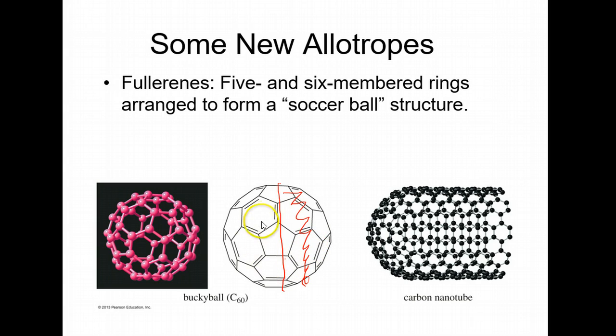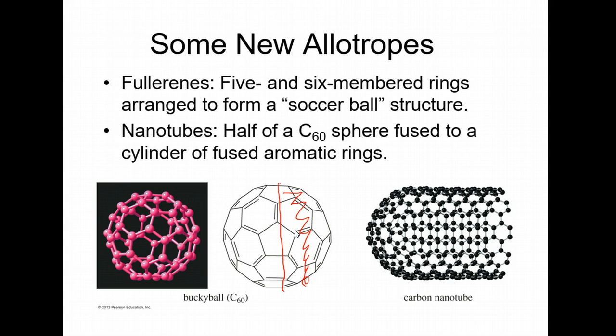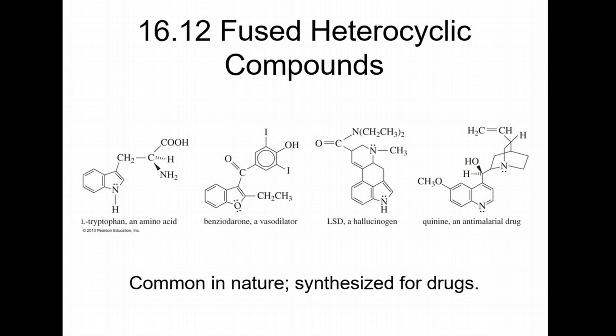A nanotube is half of a sphere fused by a cylinder of fused aromatic rings, which again is like graphene or graphite. Let's pause there and we'll make this a video, and then we will start the next video at 16.12.